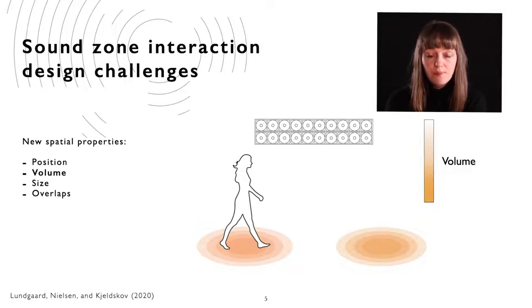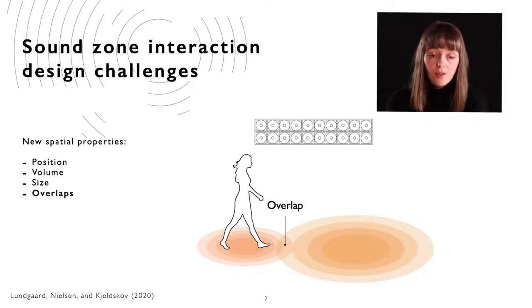Like other speaker systems, the volume can be turned up and down. Sound zones have a size which can be narrowed or expanded. And they can overlap, for example if the size of one sound zone is expanded into another sound zone, so this means that the person in the small sound zone is now disturbed by the sound from the big zone.